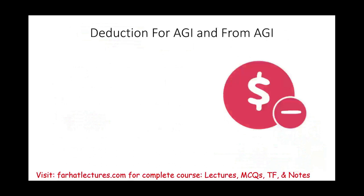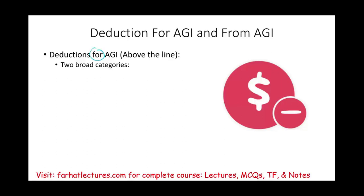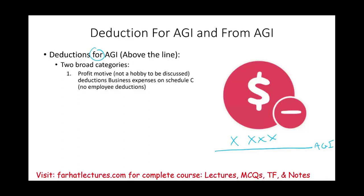Deductions for and from AGI — there are two broad categories. Deductions for AGI: remember, if this is adjusted gross income, deductions for AGI are above the line. We can have two broad categories. Any profit motive deductions, like business expenses on Schedule C or Schedule E, are above the line.